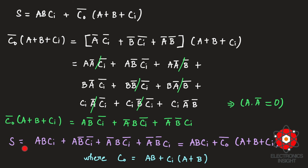Now we will take the two expressions for sum and carry out to implement the full adder using static CMOS design. We start with the carry out expression. In static CMOS design, the output obtained at the circuit node is always the complement, so we get C₀_bar. We then use a CMOS inverter to complete the implementation of the sum expression, though we also get only the sum complement.